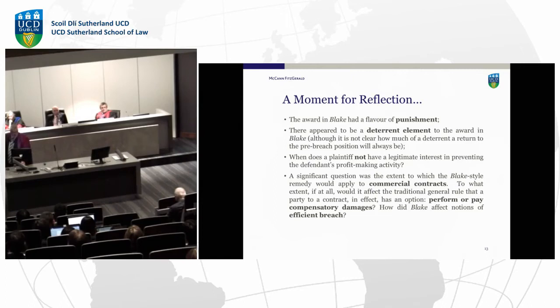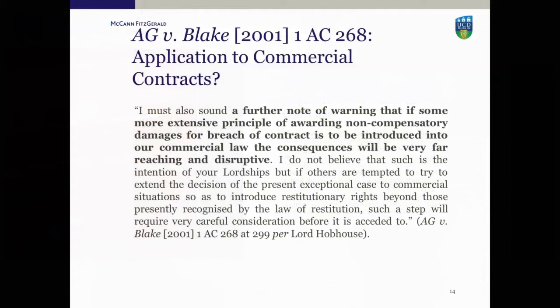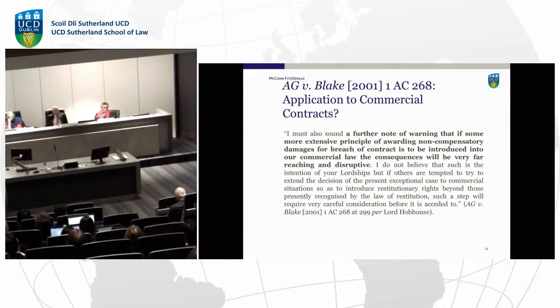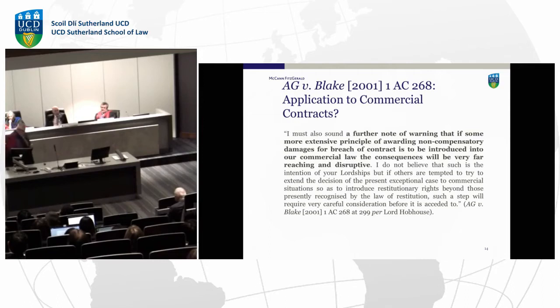The key question is: when does a claimant not have a legitimate interest in preventing the defendant's profit-making activity? In one sense a party to a contract always has an interest in performance. And would Blake apply to normal commercial contracts? Lord Hobhouse, who dissented, put in a very strong warning against extending this remedy into the commercial sphere, concerned about concepts of efficient breach and the impact of applying the account of profits remedy outside of the highly unusual, exceptional facts of Blake.